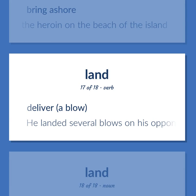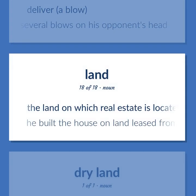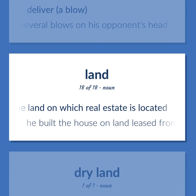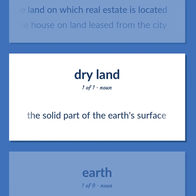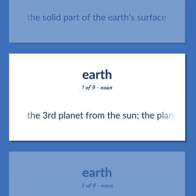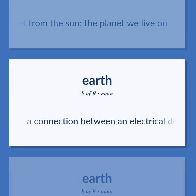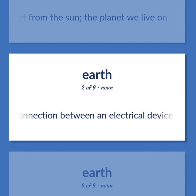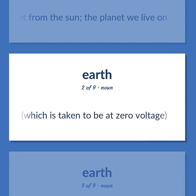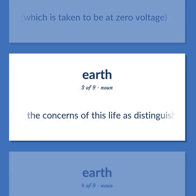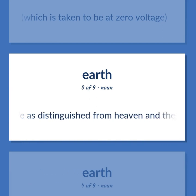Deliver a blow — 'He landed several blows on his opponent's head.' The land on which real estate is located — 'He built the house on land leased from the city.' The solid part of the earth's surface. The third planet from the sun — the planet we live on. A connection between an electrical device and a large conducting body, such as the earth, taken to be at zero voltage. The concerns of this life as distinguished from heaven and the afterlife.